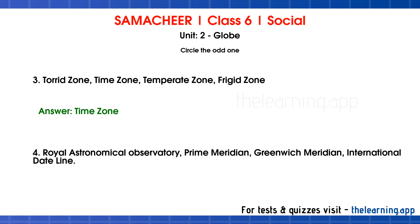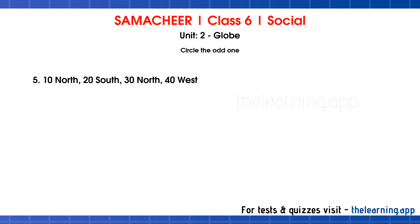Question 4: Royal Astronomical Observatory, Prime Meridian, Greenwich Meridian, International Date Line. Correct answer is International Date Line. Question 5: 10 North, 20 South, 30 North, 40 West. Correct answer is 40 West.